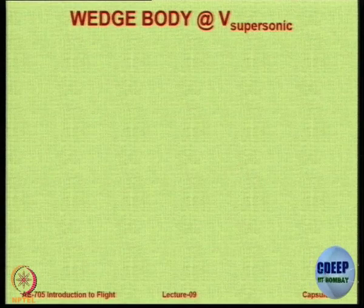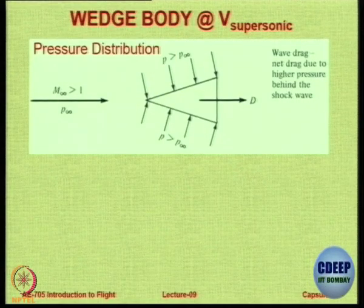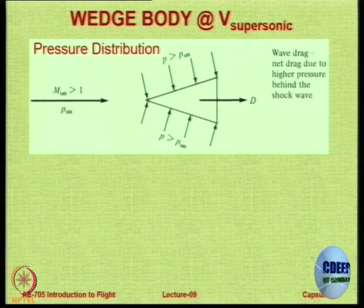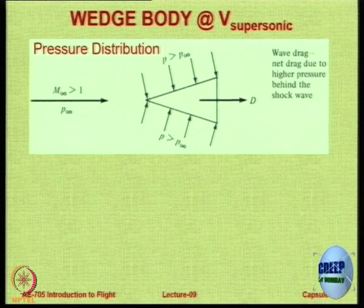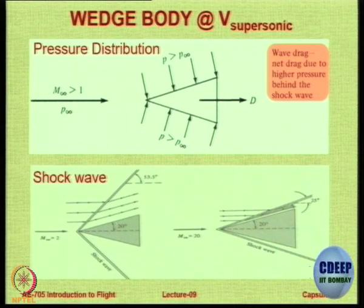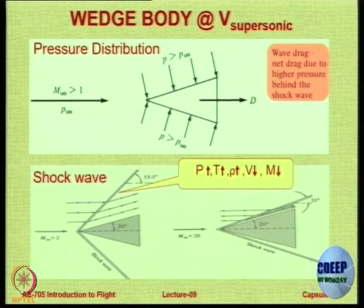Let us see why we have this phenomenon. In supersonic flow, if we take a wedge body, on the upper surface we have P greater than P-infinity, and on the bottom P less than P-infinity. The wave drag will be the net drag due to the higher pressure behind the shock wave. The shock wave manifests right from the leading edge in supersonic flow, and the shock angle is a function of Mach number: sin inverse of 1/M. Pressure, temperature and density increase, but velocity and Mach number decrease, while total pressure and temperature remain constant.